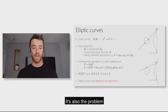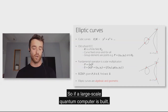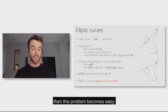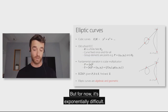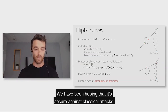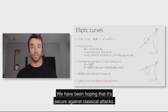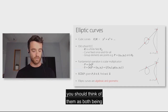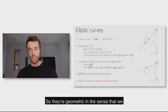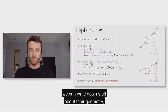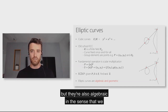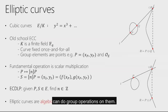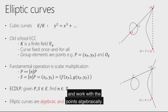But the elliptic curve discrete log is the foundational problem of classical ECC — and it's also the problem that quantum computers are very good at solving. So if a large-scale quantum computer is built, this problem becomes easy; for now it's exponentially difficult. One thing to note is that elliptic curves are both algebraic and geometric objects. They're geometric in the sense that we can draw those curves, but also algebraic in the sense that we can do group operations on them and work with the points algebraically.